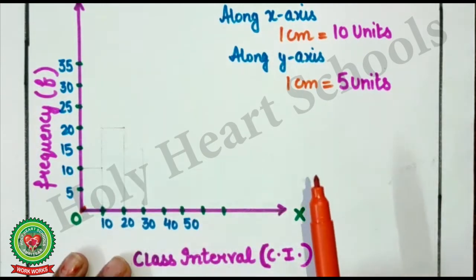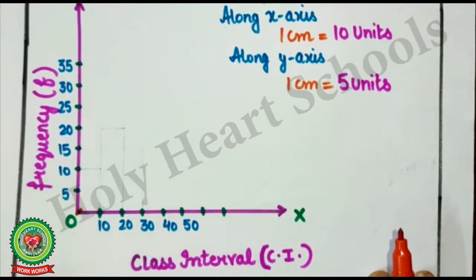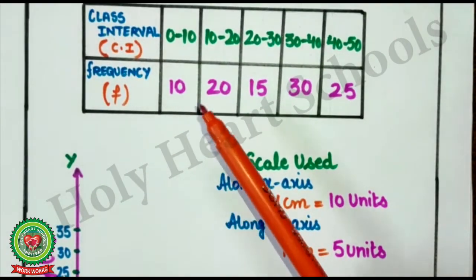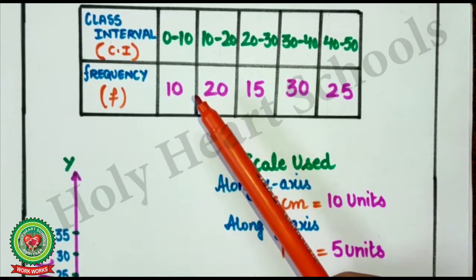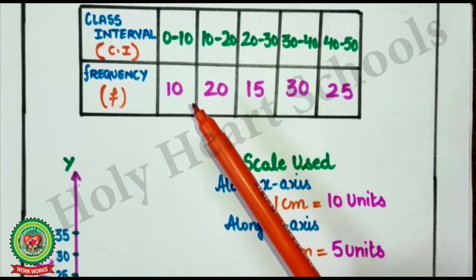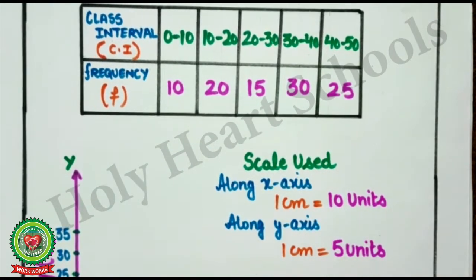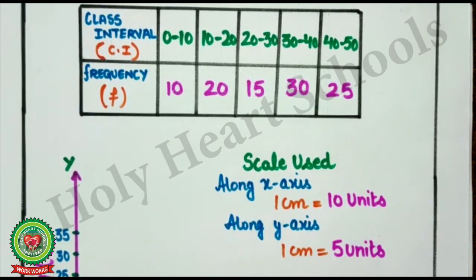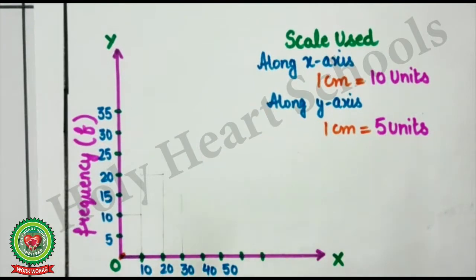Now, in the same way, I will select table for the Y-axis. Now, here, second information will lie on Y-axis. Now, I have to select one common table. So, here, as you can see, all numbers are the multiples of 5. So, I will take table of 5.